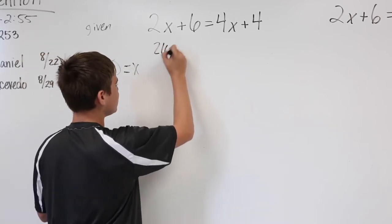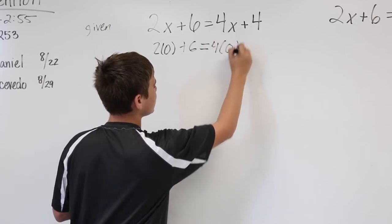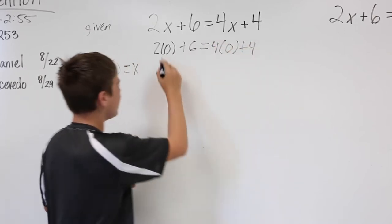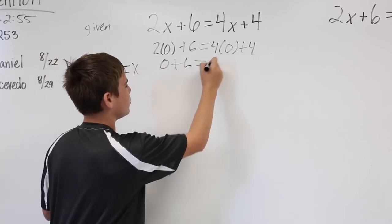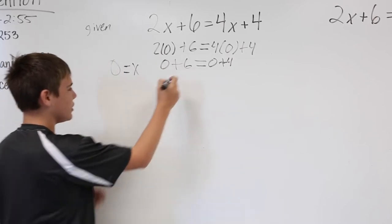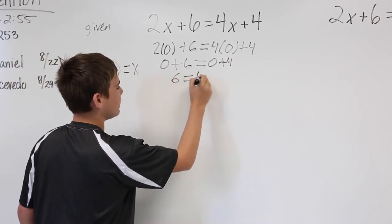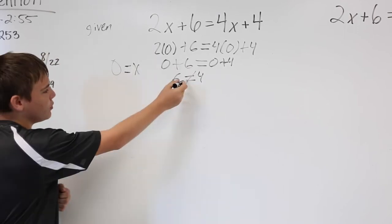If you substituted it in, you would have two times zero, which is zero, and four times zero, which is zero, where then you would have six and four. And that would not equal each other. The symbol meaning no solution.